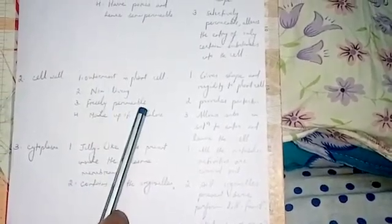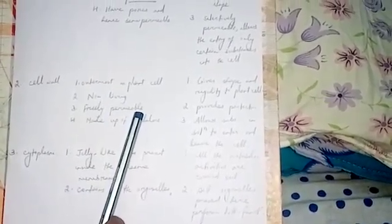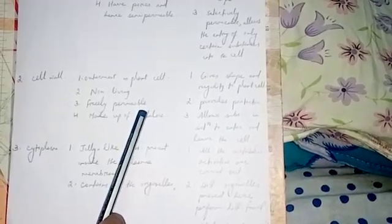Coming to the next, that is cell wall. It is the outermost structure which is present in a plant cell surrounding the plasma membrane and this is absent in an animal cell. It is non-living, freely permeable, means it allows all the substances to enter in solution form into the cell.